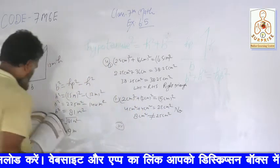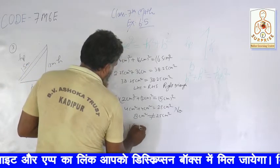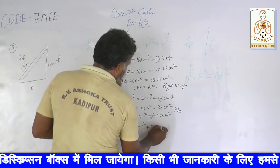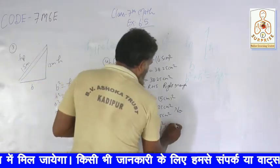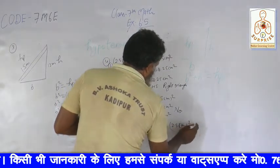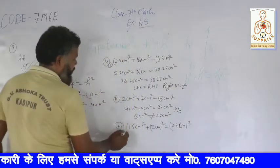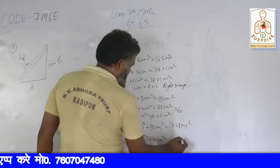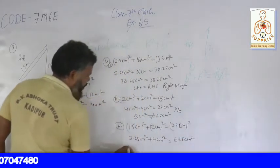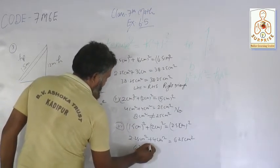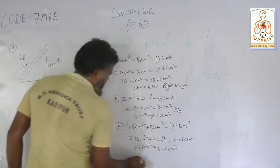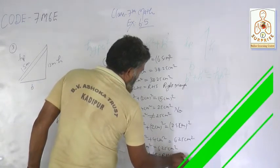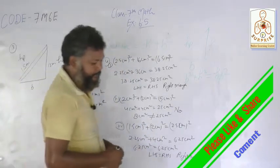Question number 3: 1.5 cm square. After computing: 6.25 centimeter square. So since LHS equals RHS, yes — after yes, this is a right triangle. Okay, all three sub-questions done.